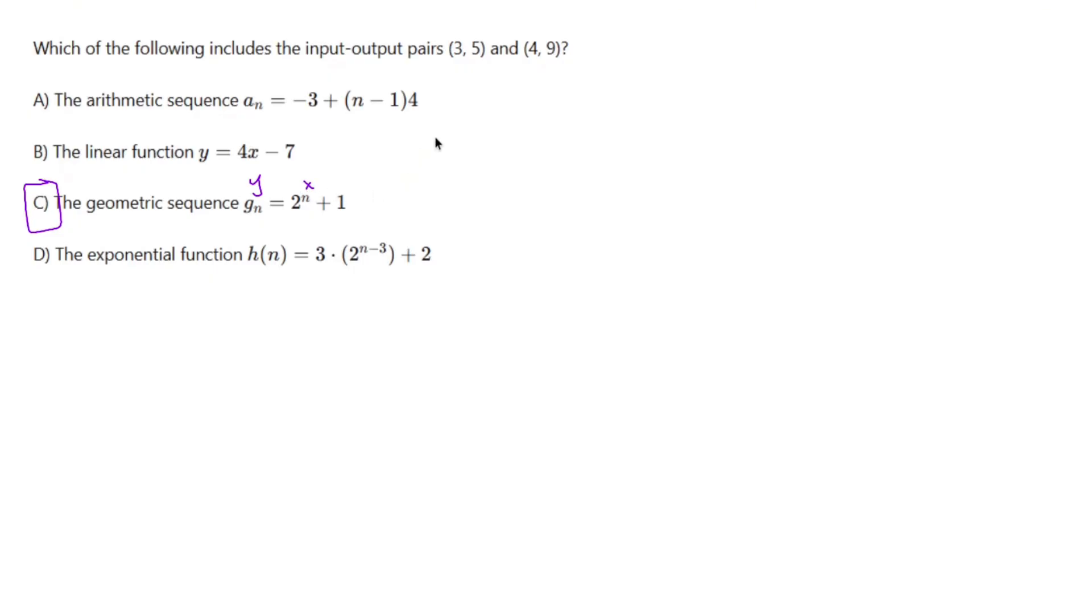So if I were to plug in 3 for n, that would be 2^3 + 1, and I should get 5. So 2^3 is going to be 8 plus 1, which equals 9. Last time I checked, 5 isn't 9, so it's not C.